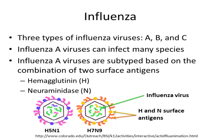Influenza A viruses can infect many different species of birds and mammals in addition to humans. Since there are so many influenza A viruses, they are further divided into subtypes and named based on the antigens found on the surface of the virus.